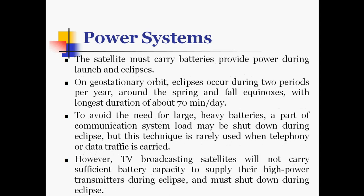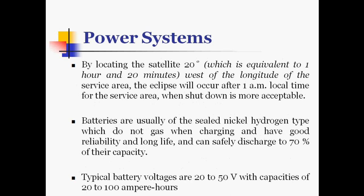The satellite must carry batteries to provide power during launch and eclipses. On geostationary orbit, eclipses occur during two periods per year around the spring and fall equinox, with a longest duration of about 70 minutes per day. To avoid the need for large, heavy batteries, a part of the communication system load may be shut down during eclipse. But this technique is rarely used when telephony or data traffic is carried. However, TV broadcasting satellites will not carry sufficient battery capacity to supply their high power transmitters during eclipse and must shut down during eclipse.